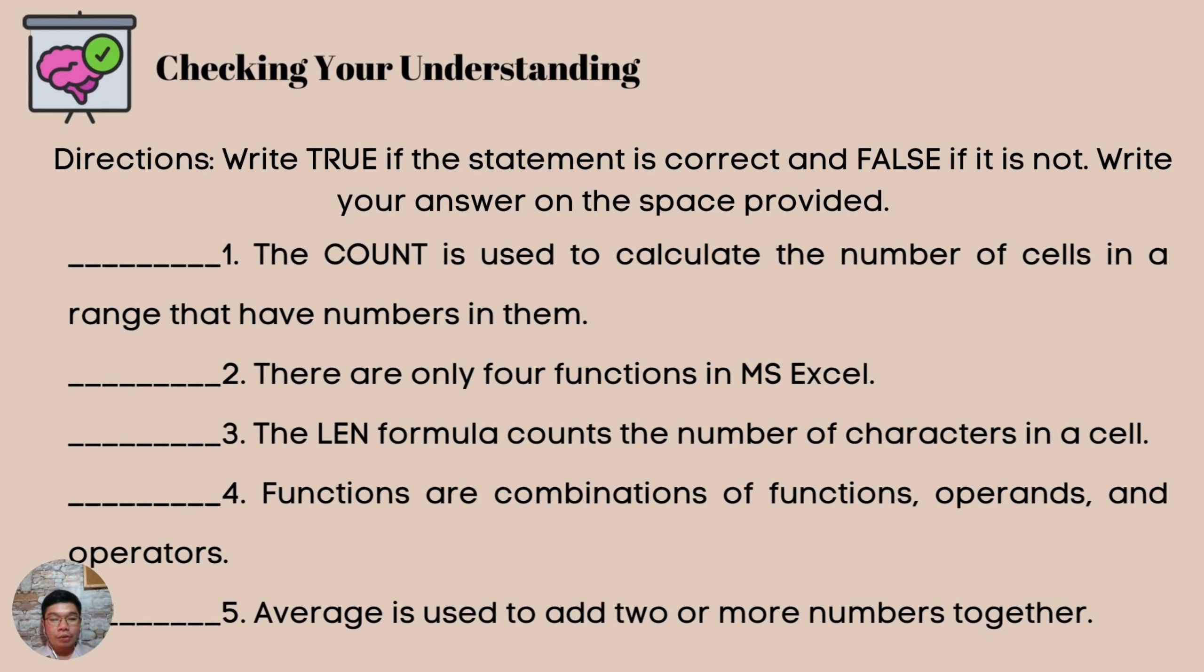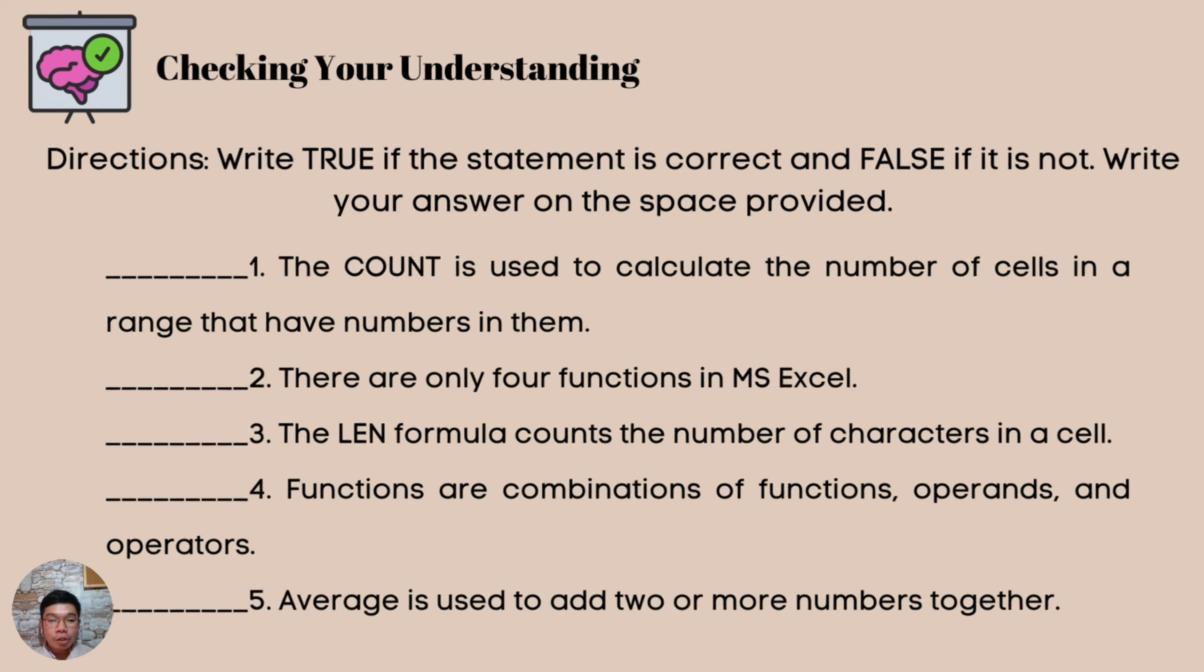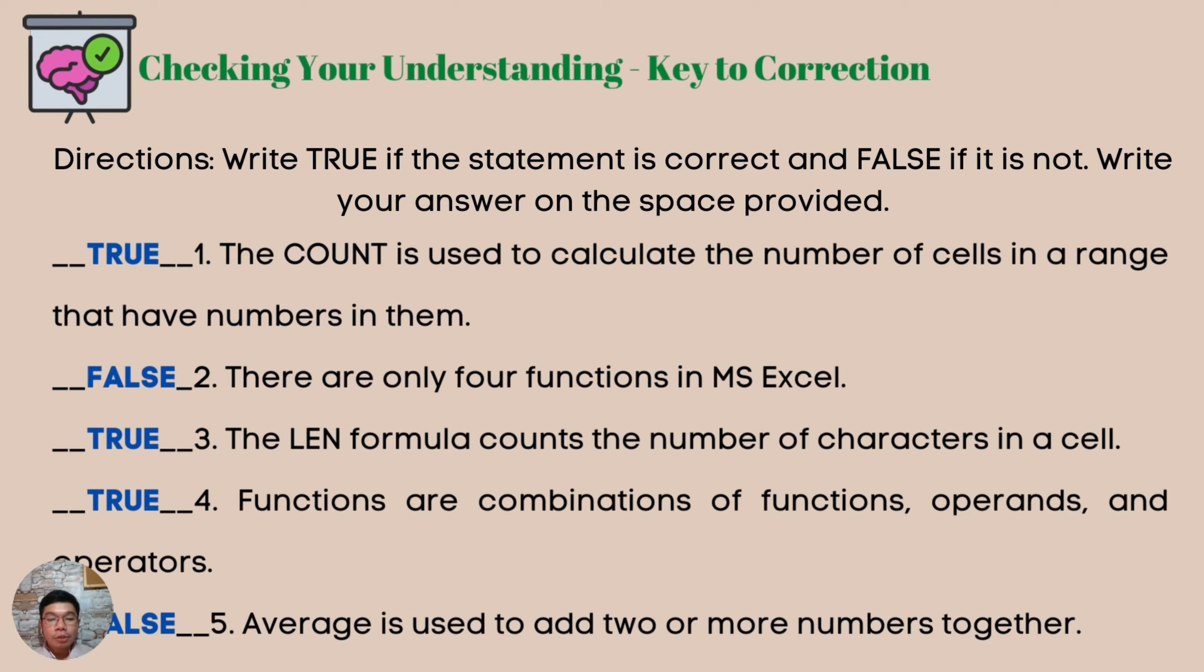Let's check your understanding. Directions. Write true if the statement is correct and false if it's not. Write your answer on the space provided. This time, again, please bring out your TLE 6 notebook and write your answers there. Pause this video while you answer and resume it once you are done. Let us now check your work. Number 1. The count is used to calculate the number of cells in a range that have numbers in them. The correct answer is true. 2. There are only 4 functions in MS Excel. The correct answer is false. 3. The LEN formula counts the number of characters in a cell. True. 4. Functions are combinations of functions, operands, and operators. The answer is true. 5. Average is used to add up two or more numbers together. The answer is false.